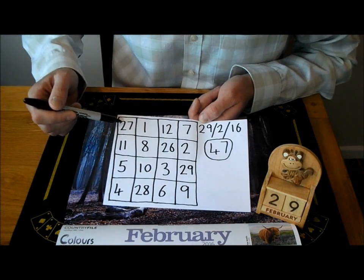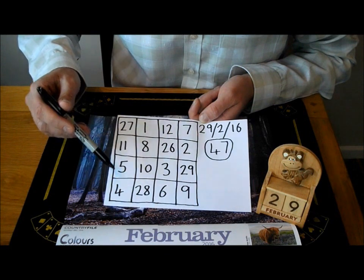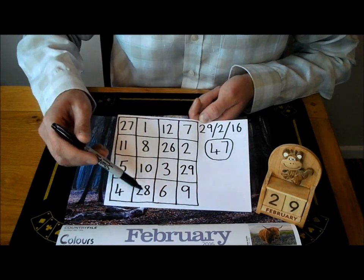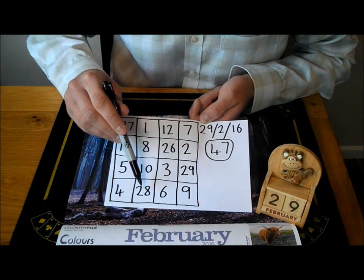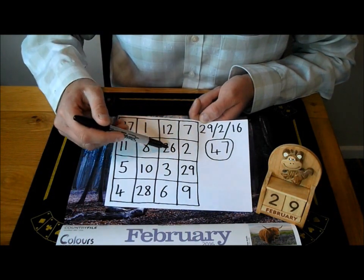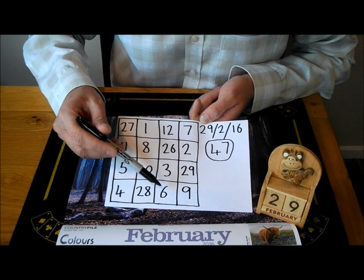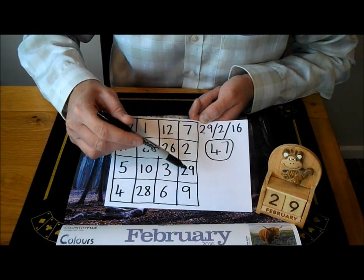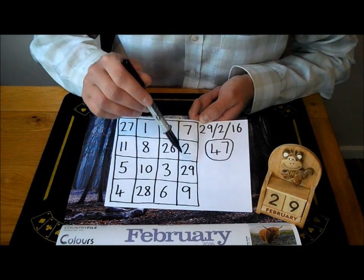And if you go down, 27 plus 11 plus 5 plus 4 is 47. This row here, 1 plus 8 plus 10 plus 28 is 47. This row here, 12 plus 26 plus 3 plus 6 is 47. This row here, 7 plus 2 plus 29 plus 9 is 47.